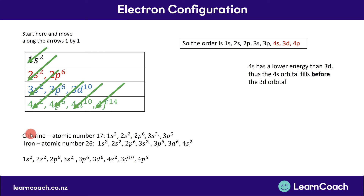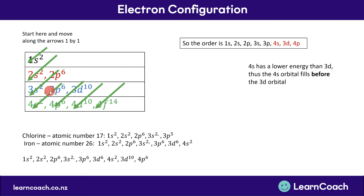Let's look at some examples. First, chlorine with atomic number 17. There are 17 electrons filling in order. 1S2 gives 2 electrons, 2S2 gives 4, 2P6 gives 10, 3S2 gives 12. Next would be 3P6, but that would give 18 — and we only have 17. So the 3P orbital isn't full; it only has 5 electrons. The electron configuration for chlorine is: 1S2, 2S2, 2P6, 3S2, 3P5.